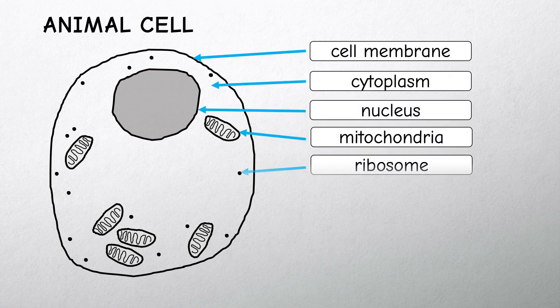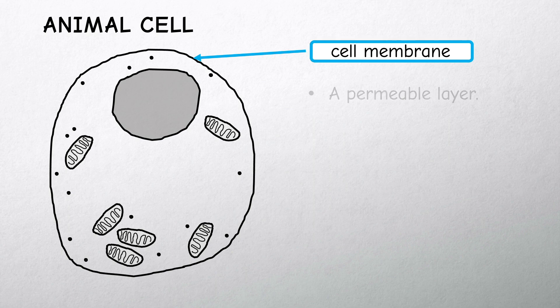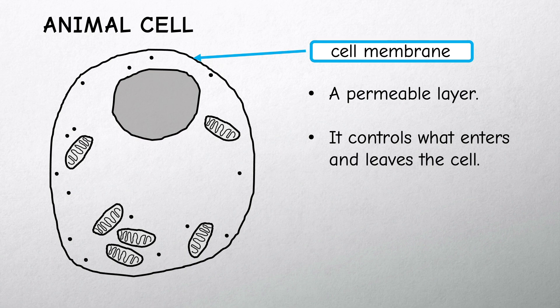They are surrounded by a thin flexible cell membrane. This membrane is permeable so things can pass through it, but it controls what goes in and out of the cell by only allowing certain things to leave and enter the cell.